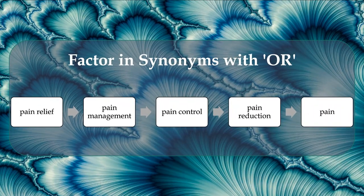Another key part of conducting an effective search using PICO is to consider synonyms, or similar terms, to your key PICO elements. If we think back to our sample PICO question, we can try and think of other ways that the literature might refer to each term or concept.